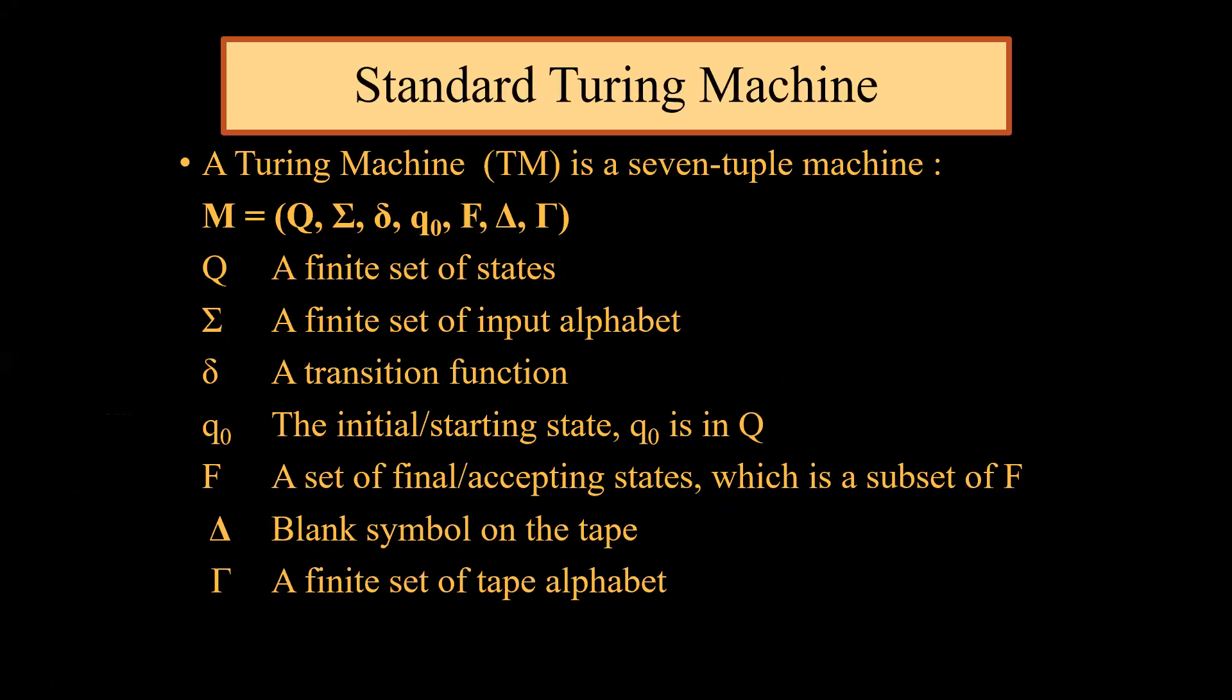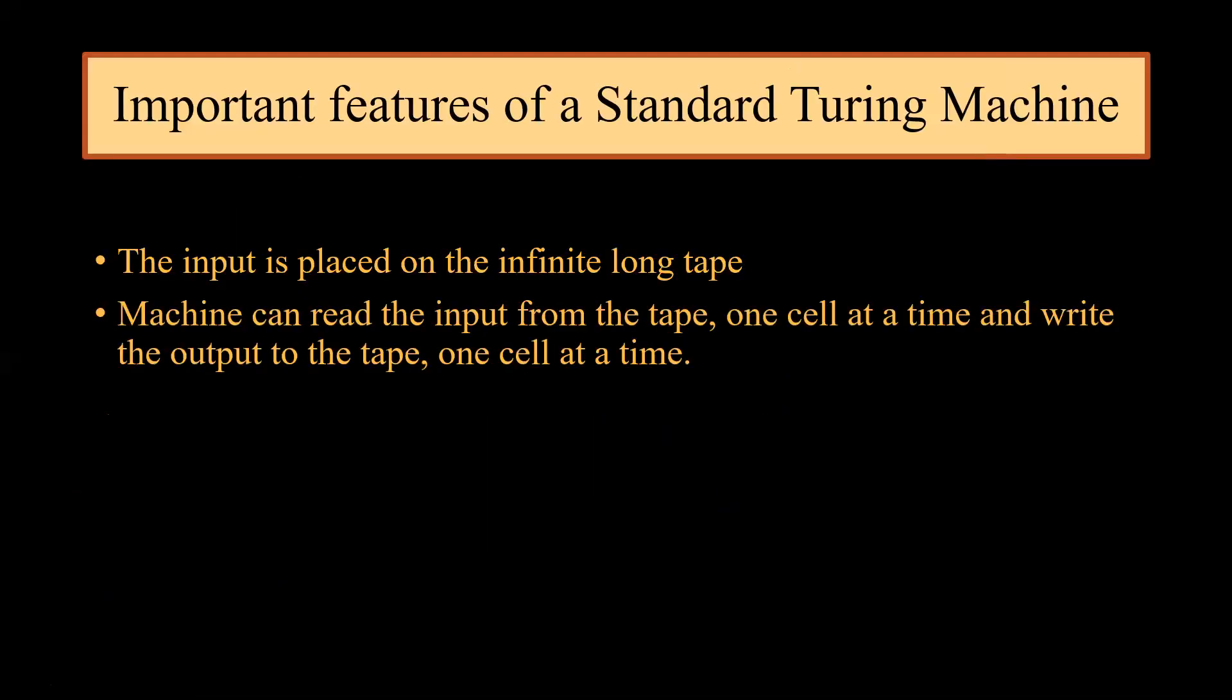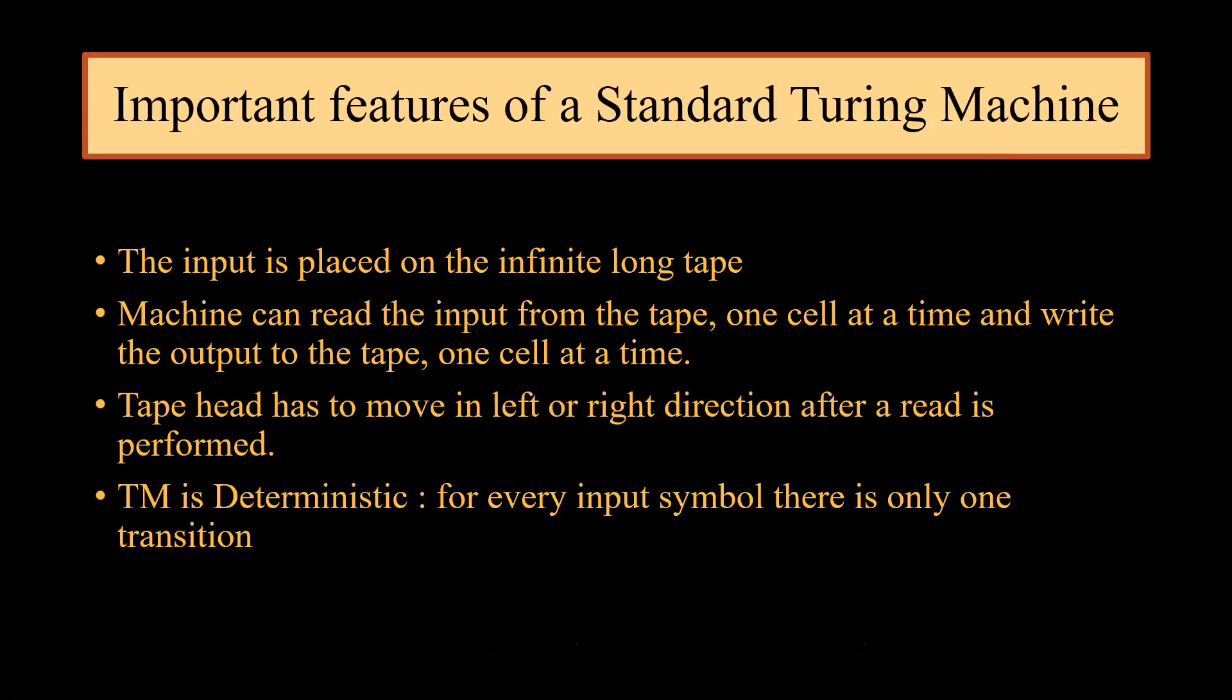A standard Turing machine consists of seven tuples as discussed in earlier slides which consists of q, sigma, delta, q0, f, and tau. The important features of standard Turing machines include: the input is placed on an infinite long tape, machine can read the input from tape one cell at a time and write the output on the tape one cell at a time, tape head has to move in left or right direction after read is performed, and Turing machine is deterministic, that is, corresponding to every input symbol there is only one transition.